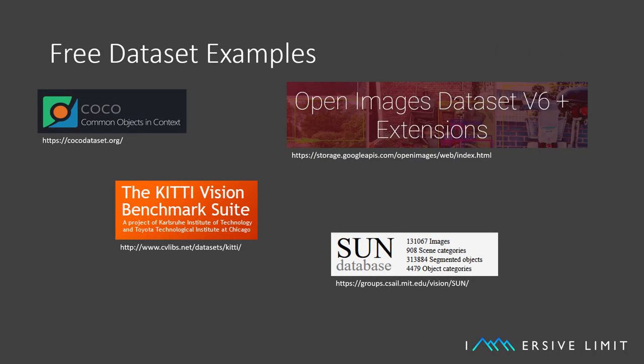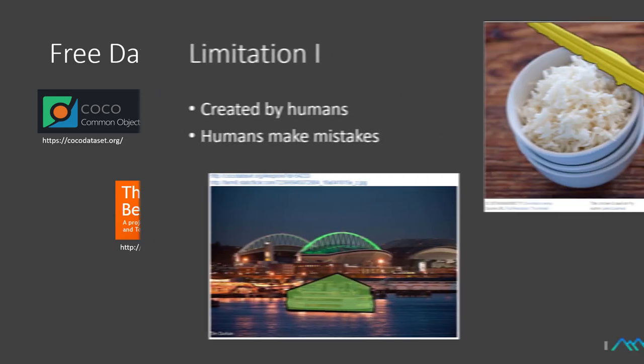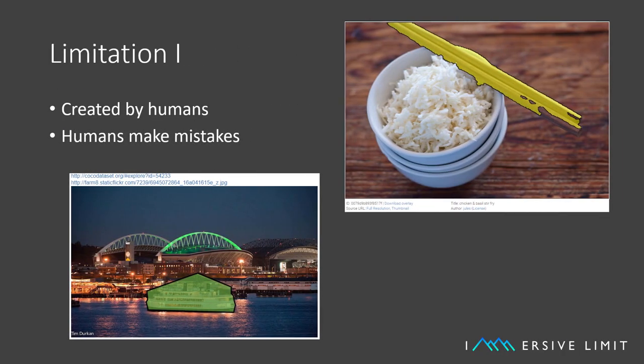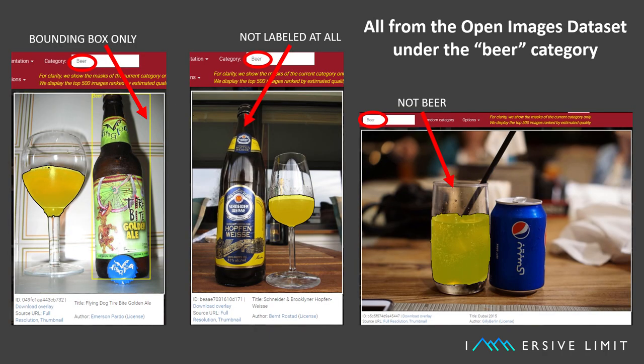There are a fair amount of freely available image datasets out there for research purposes, but they have their limitations. Limitation number one: they are created by humans — typically low-paid humans, unfortunately, that have more incentive to work quickly than to work precisely. And it makes sense. Also, humans make mistakes.